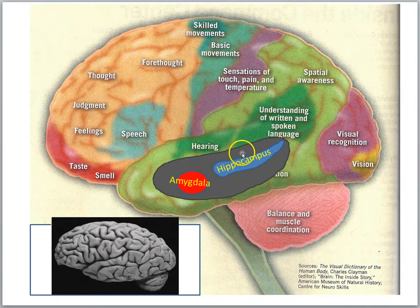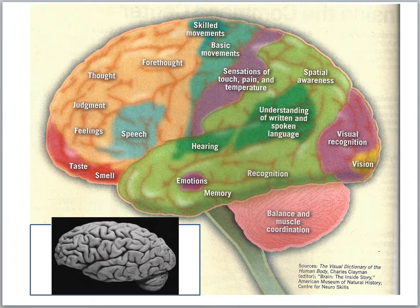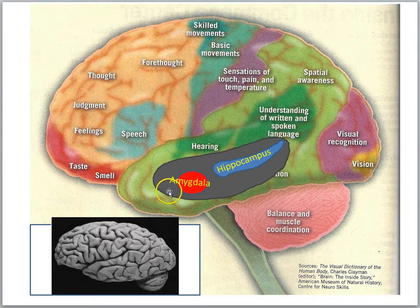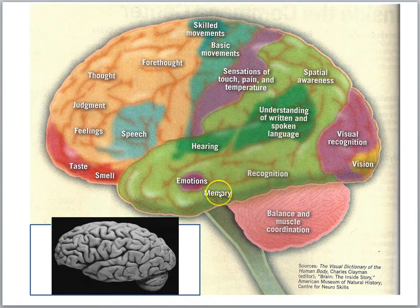Now back to the temporal lobe here — underneath, if we were to cut away some of the surface of the temporal cortex, we would see two very important structures. The amygdala is that emotional part of the brain. There are lots of parts of the brain involved in emotions, but the amygdala is a critical component of the emotional brain. And then the hippocampus is a critical component of the memory system. Notice its proximity to the cortex — the temporal cortex — which is the long-term storage site for some memories.